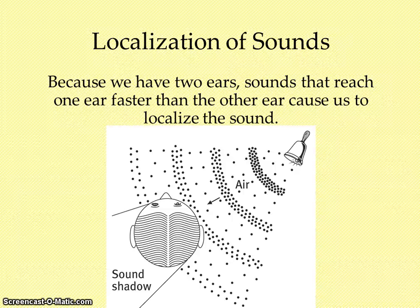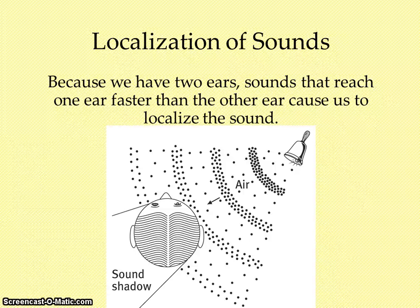One interesting thing is that we have two ears. Just like two eyes give us depth perception, sounds that reach one ear faster than the other allow us to localize sound. If you've ever tilted your head toward a sound you're trying to identify, that's sound localization — the sound is hitting one ear quicker than the other, helping you determine where it's coming from.